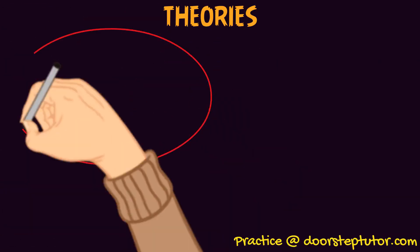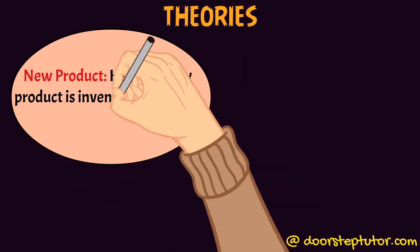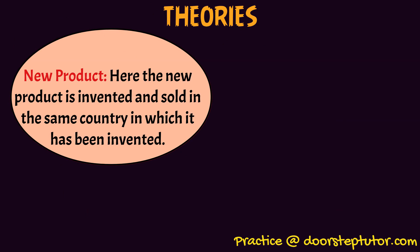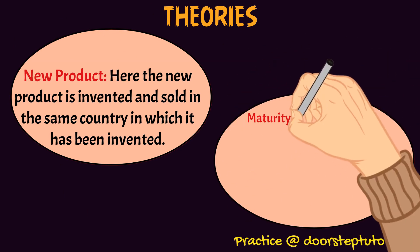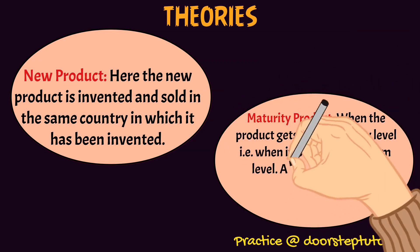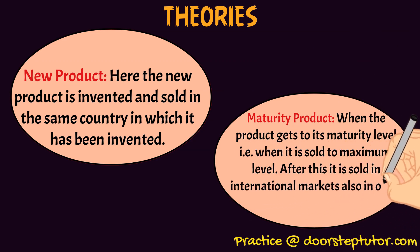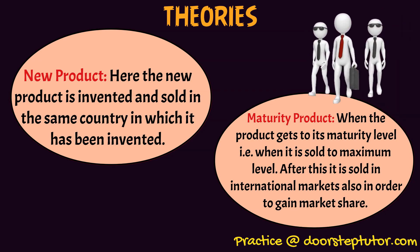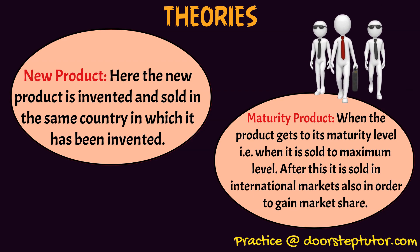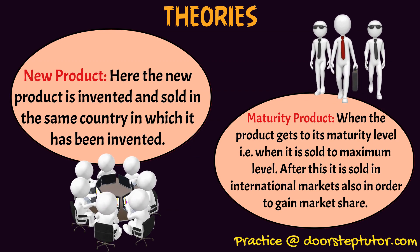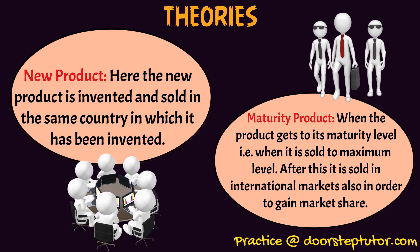When we talk about the new product stage, the product is invented and sold in the same country in which it has been invented. Then comes the maturity product stage, wherein the product is well known to everyone in the country and has reached its maturity level — that is, its sales are no longer increasing. So the company will start exporting it to other countries and international markets, so as to gain market share and remain relevant.